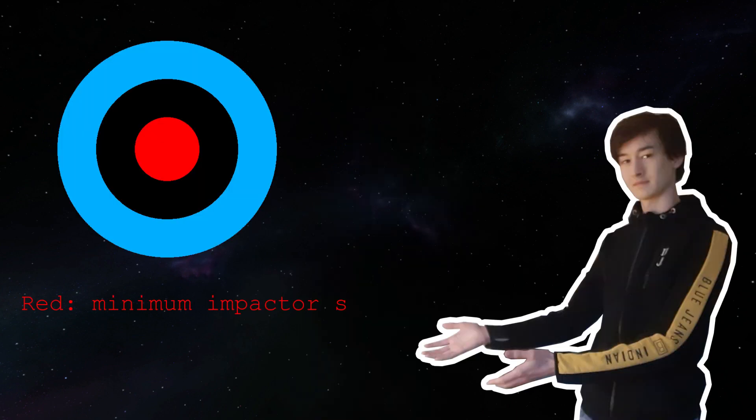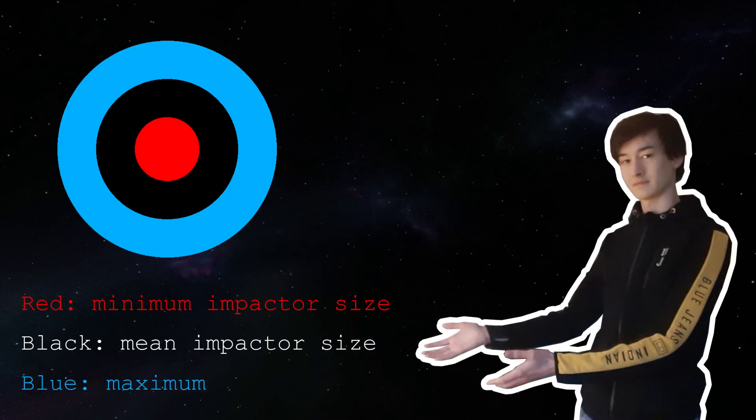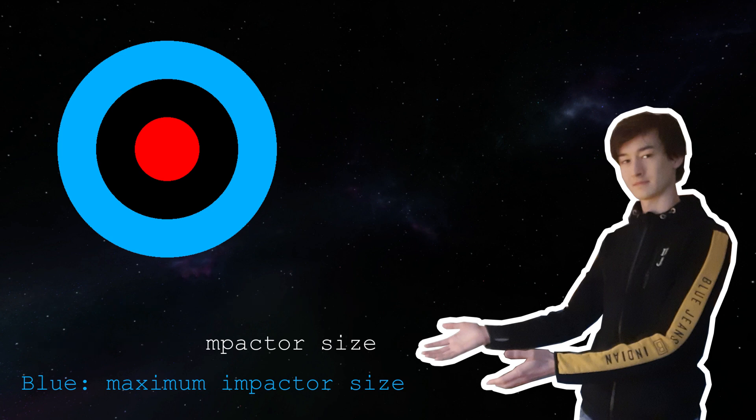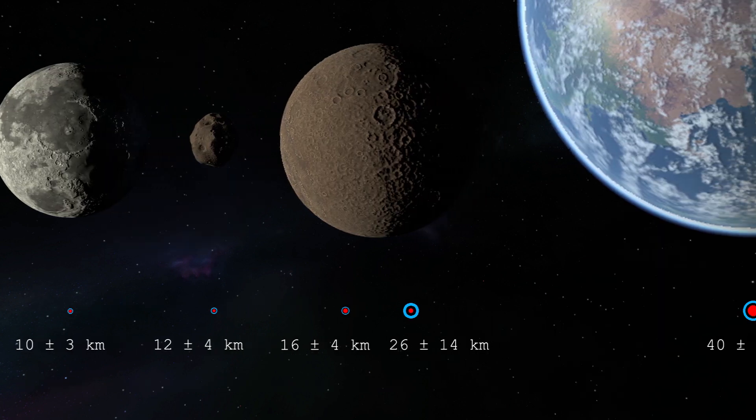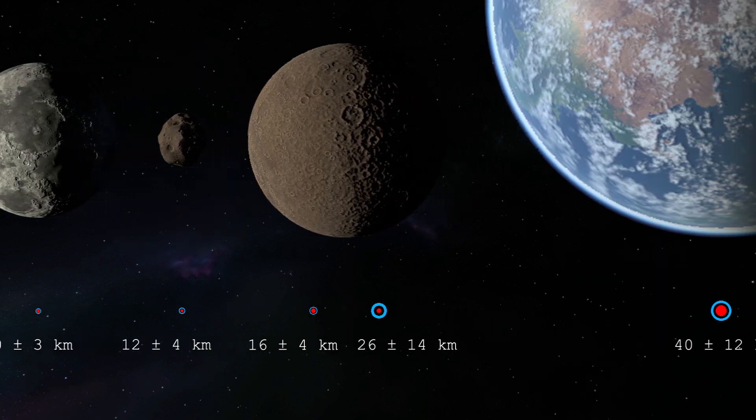I will give a visual aid to the estimated sizes. Red will be the minimum size according to this method, black the mean, and blue is the maximum size of the asteroid. Putting them all in one line, we will get this.